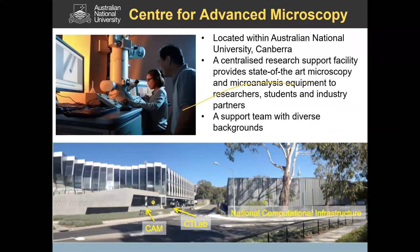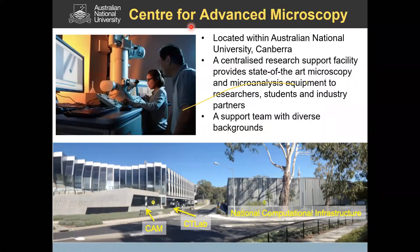The Center for Advanced Microscopy is one of the nodes of Microscopy Australia, located within the Australian National University in Canberra. We have a range of microscopy and microanalysis instruments within the center that are open to the public, and importantly, we have a group of dedicated specialists supporting researchers both within the campus and from across the world.